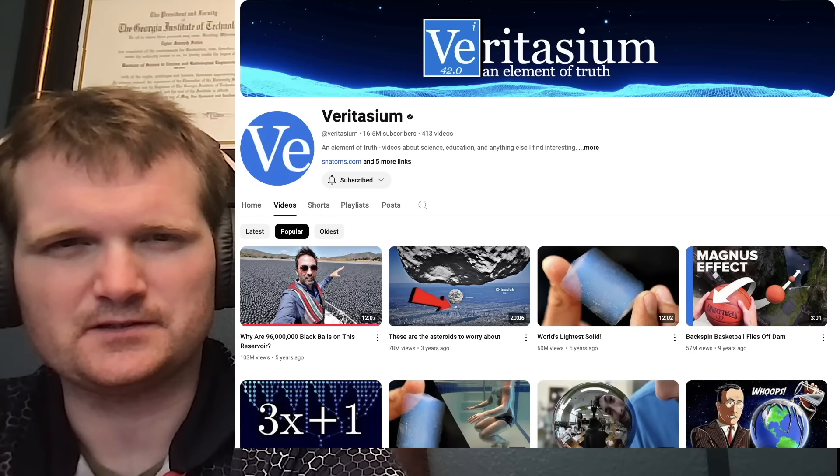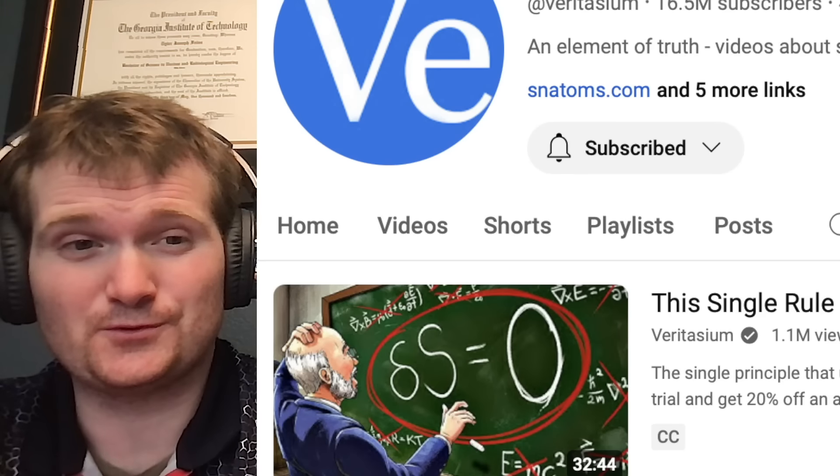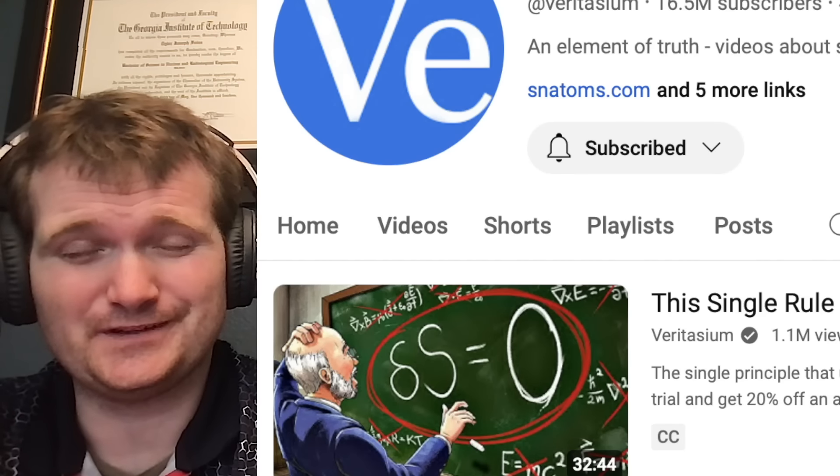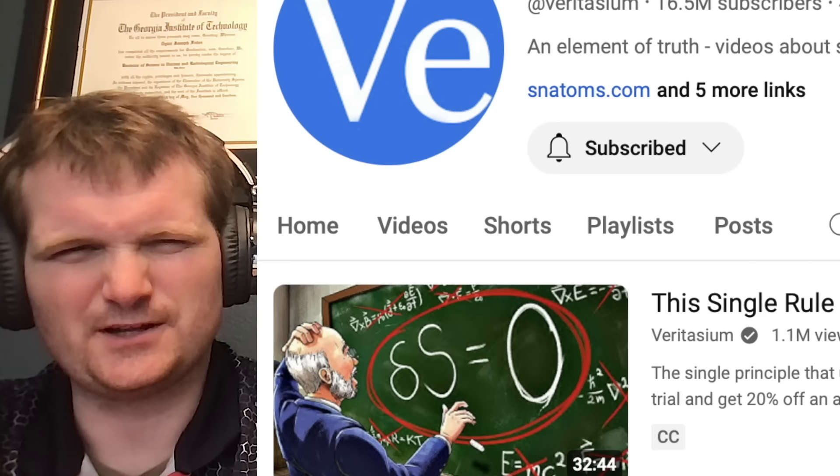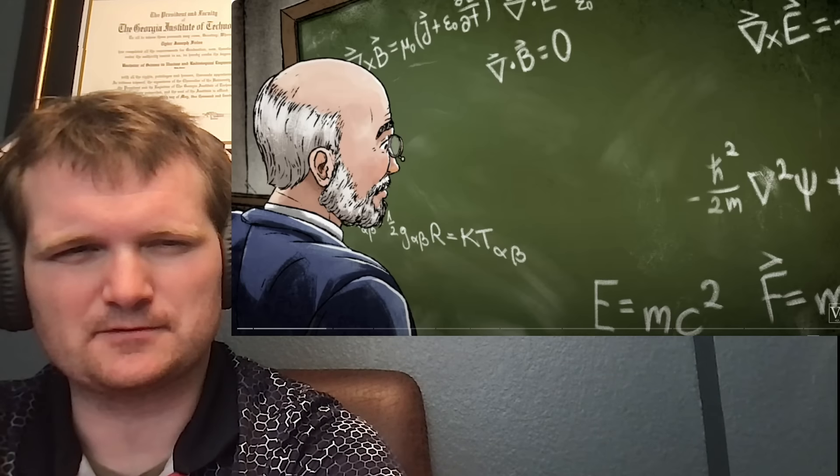Today we're going to be looking at another one of Veritasium's videos. Specifically, this single rule underpins all of physics. That DS equals zero. So that whole thing about speed of light traveling the shortest path. At least that's what I'm thinking. For those of you who don't know me, I'm Tyler Fulce.